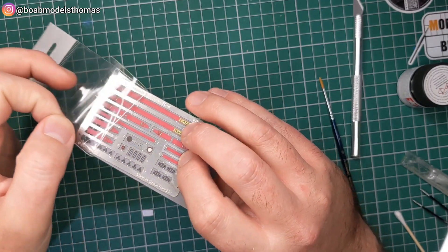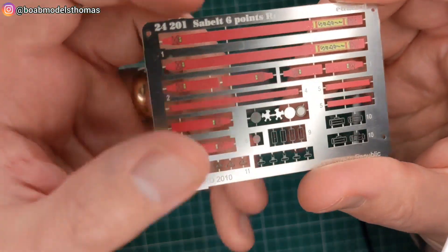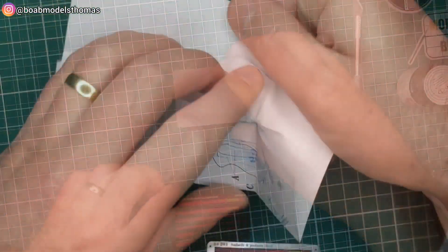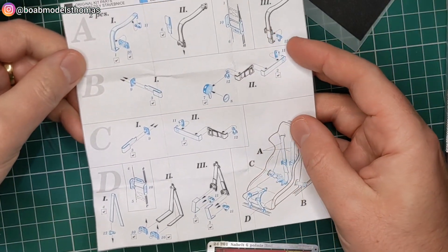So you've got a photo etch fret here which is really nice and pre-painted on both sides. As you can see it's got a slight texture to the belts to make them look more realistic, and then you've got the instructions that you can see here.